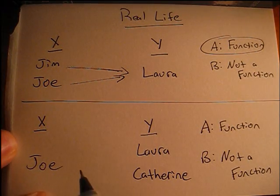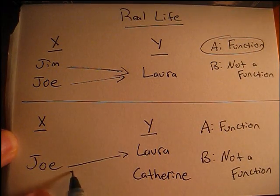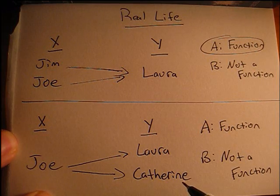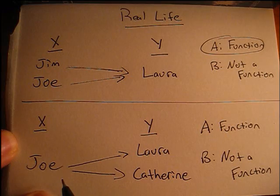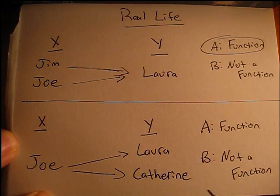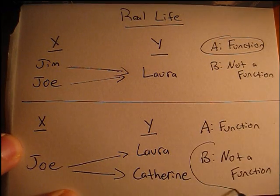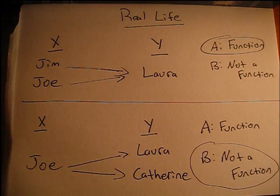What would not be a function is if Joe asked out both Laura and Catherine at the same time. Since Joe is a greedy person, and tries to ask out Laura and Catherine at the same time, we would consider that pairing not a function and not acceptable.